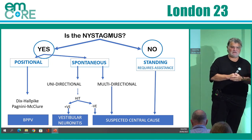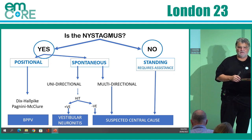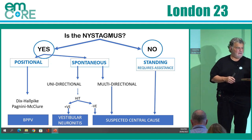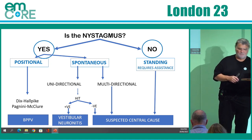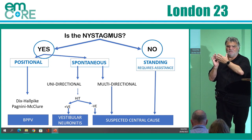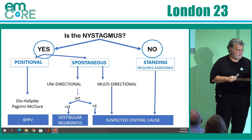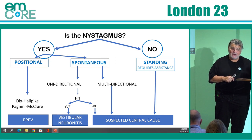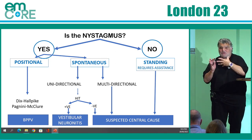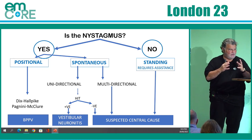If you do have nystagmus and it's positional, the Dix-Hallpike and the Pagnini — which is just the lateral movement of the head — are used to look for the lateral semicircular canals. If it's spontaneous, that is, it's not triggered by positional movement.